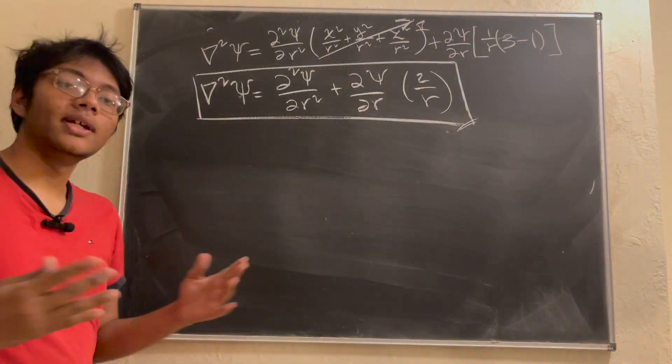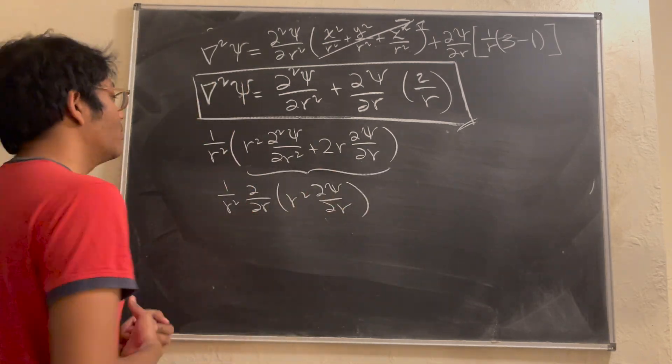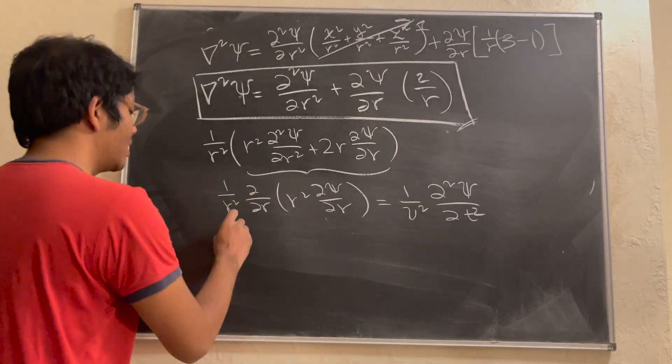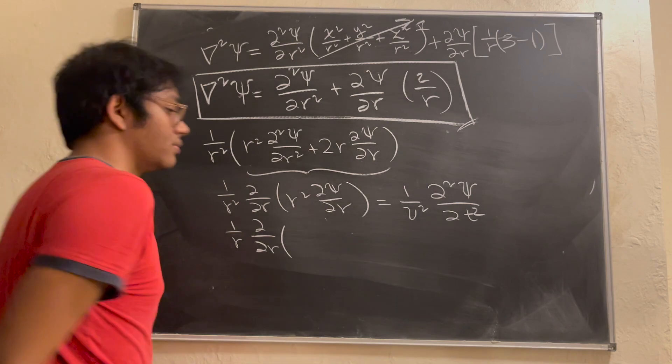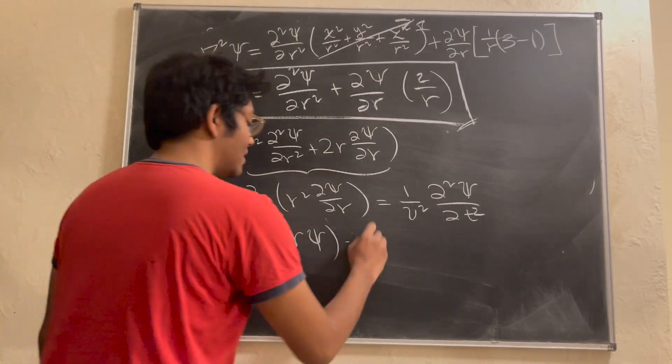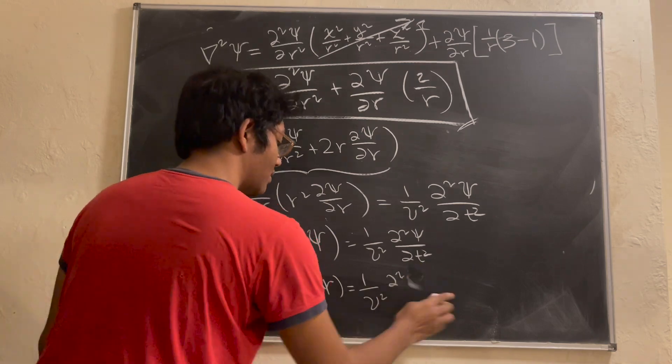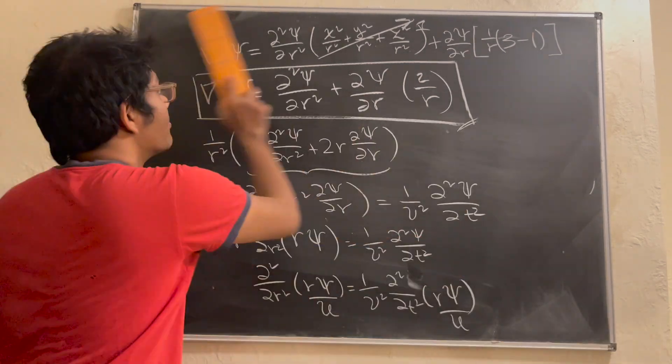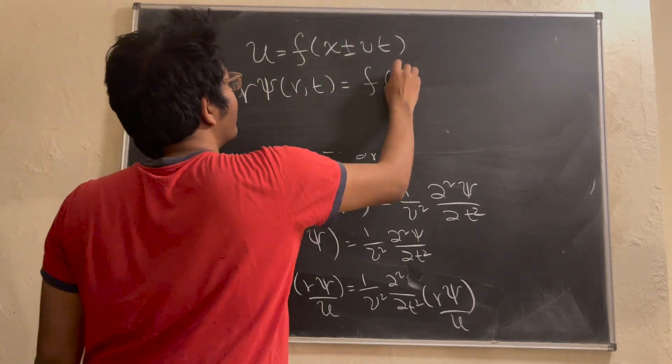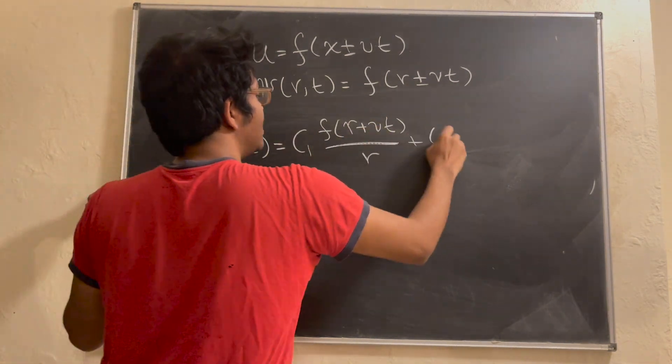All we have to do now is remind ourselves that the right side of the one-dimensional wave equation is 1 over the velocity of the wave squared times the second partial derivative of the wave with respect to time. Now that we realize this, all we have to do is realize that the solution to the spherical wave equation, U, let's call that solution U, takes the following form, F of R plus minus VT, which is exactly the solution to the one-dimensional wave equation. Now we just solve for psi, and we see that psi is C1 times F over R plus C2 times G over R. And there, that is the final equation for a spherical wave.